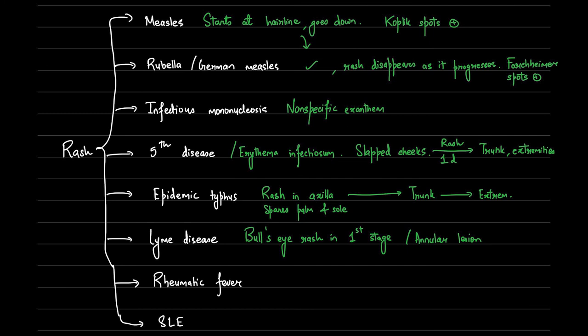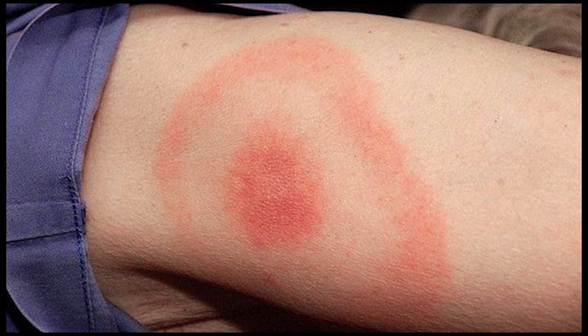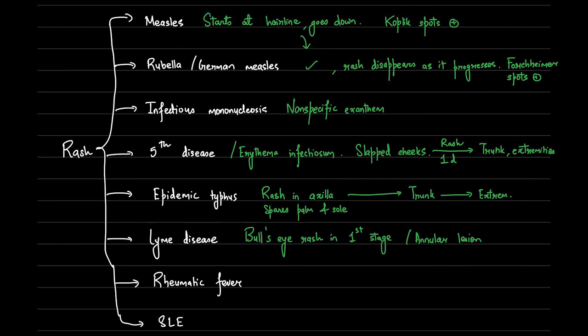Lyme disease has a classical bull's eye rash which can also come up in questions being described as annular lesions. Remember that Lyme disease is caused by Borrelia burgdorferi, and that the rash is at the first stage of infection. It causes myocarditis, Bell's palsy, CNS infection, and arthritis of large joints in the later stages.